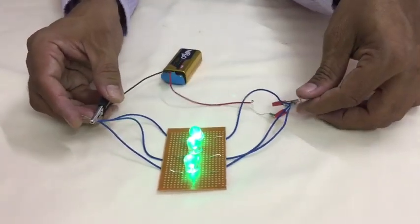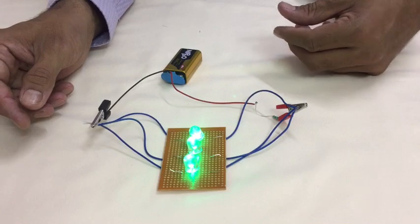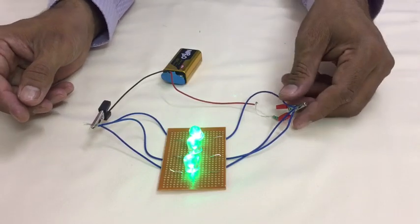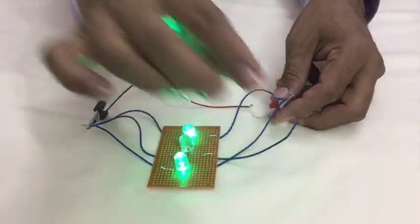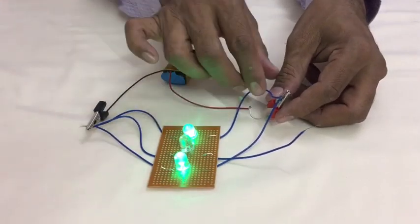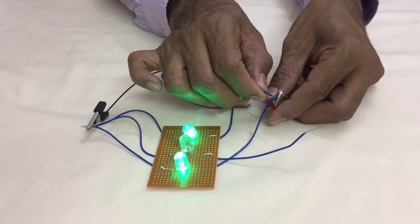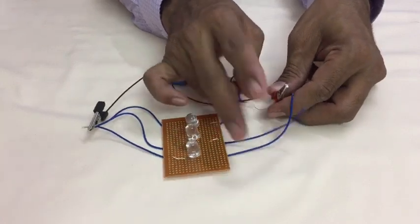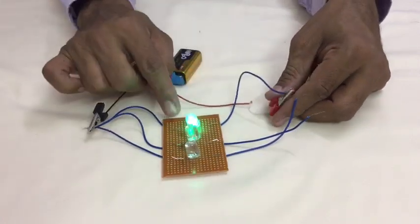You can see the bulbs are glowing with same brightness. There is no change in the brightness. Now, I am removing one wire. There is no change in the brightness. I am removing one more wire. You can see there is no change in the brightness.